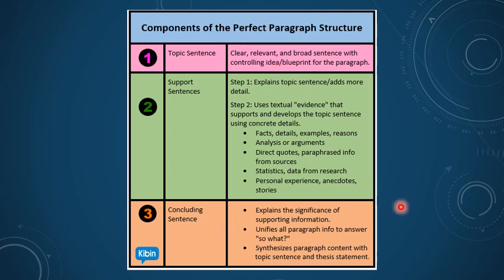Number three: the concluding sentence of a paragraph. It explains the significance of the supporting information and unifies all paragraph information to answer the question 'so what?' Readers sometimes question whatever is written in a paragraph, and the concluding sentence provides the logical answer. The concluding sentence basically reinforces your idea and answers that key question. It also synthesizes paragraph content with the topic sentence and thesis statement. Every paragraph has an opening and a closing — an idea introduced at the beginning and a concluding statement at the end.